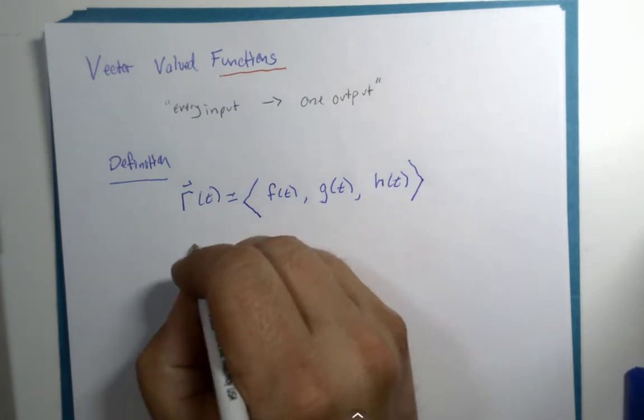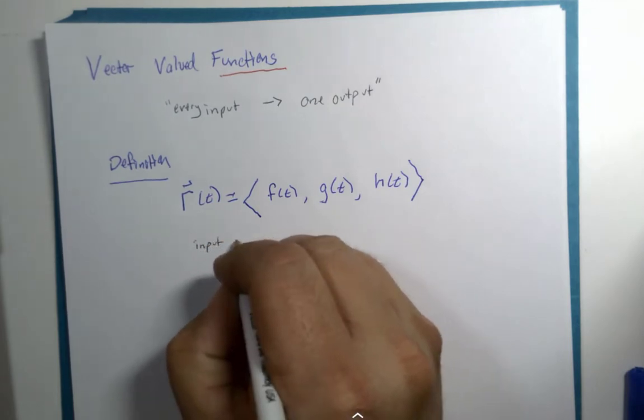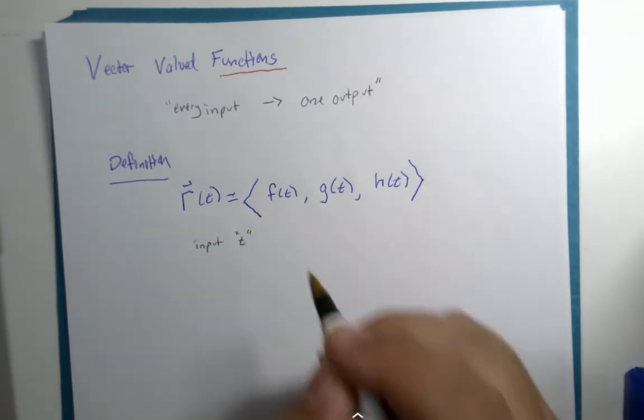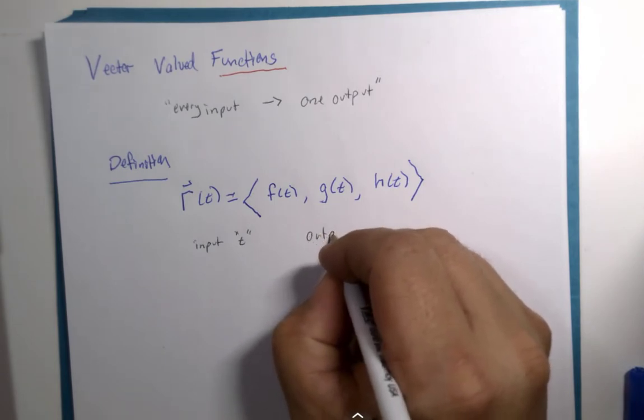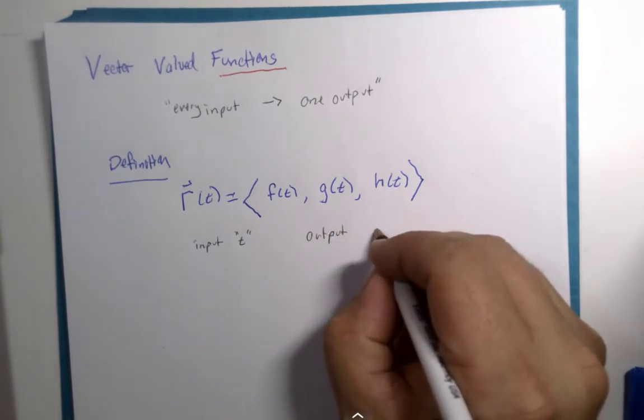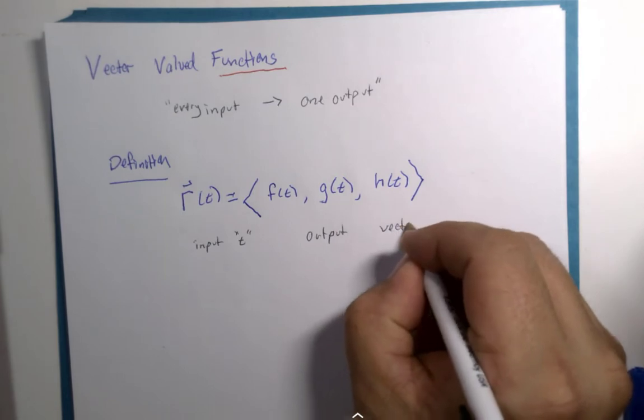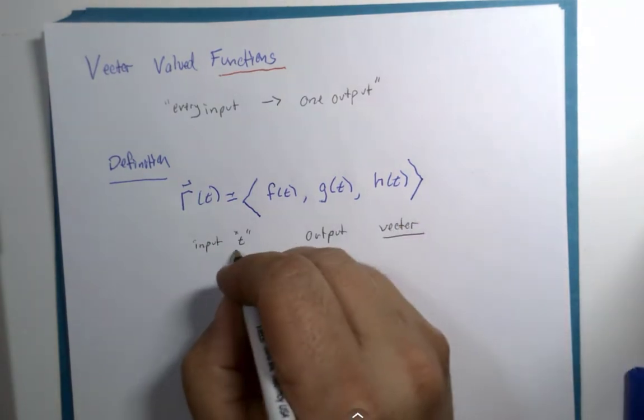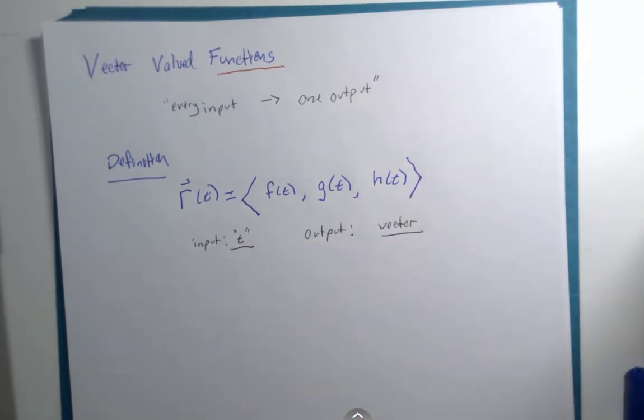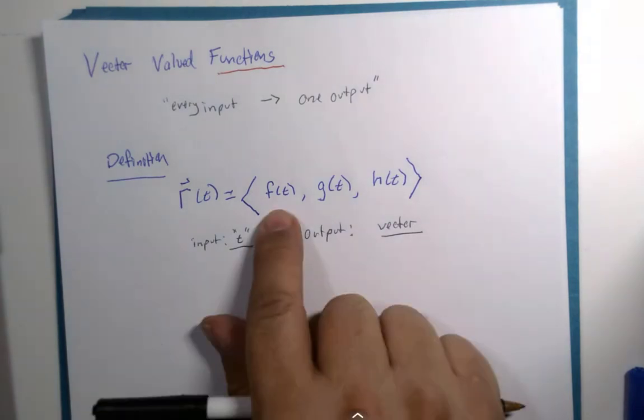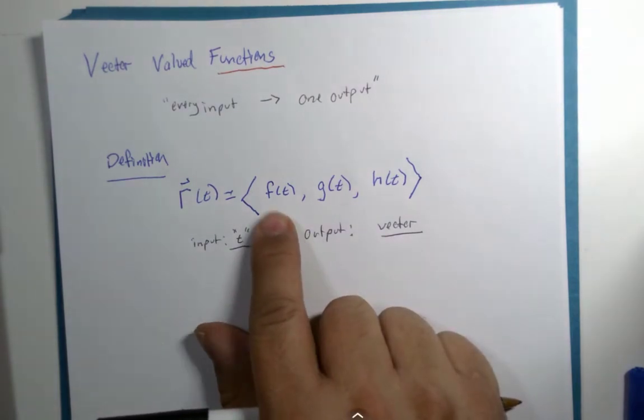What that means is the input is t, the output is a vector. The input is t, the output is a vector. So we're going to substitute the value t. That vector for this class purposes will have either two or three components to it.